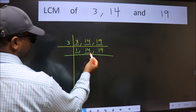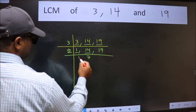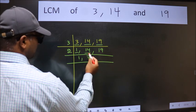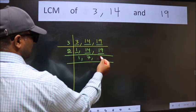So focus on the next number 14. 14 is 2 times 7. The other number 19 not divisible by 2 so we write it down as it is.